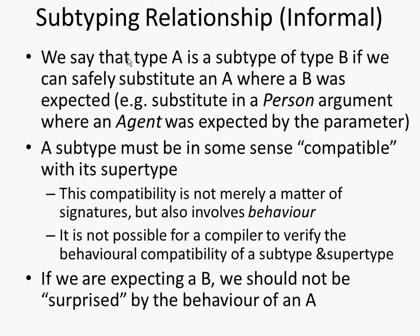We can say person connect-to and we give it an agent. We can give it a person and that's fine. And that's because all persons in AnyLogic are agents. We say that person is a subtype of agent. In other words, any place we could use an agent, we could substitute a person instead and it would be safe — we could safely substitute. In some sense a person is compatible with an agent.